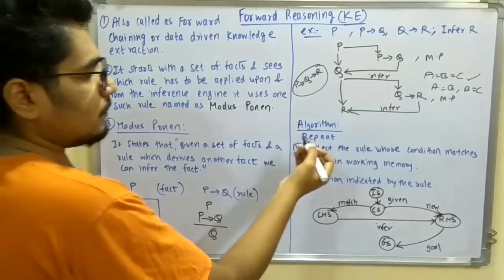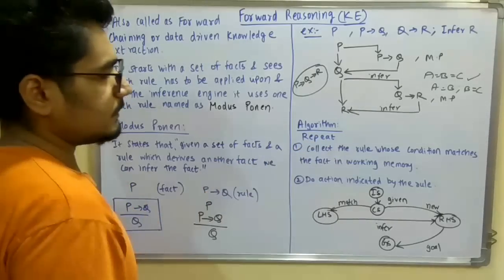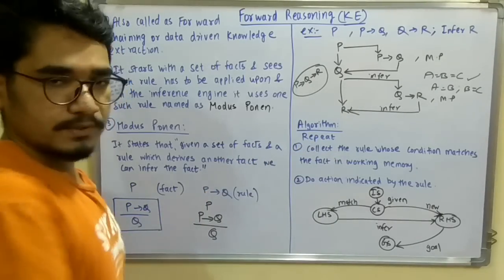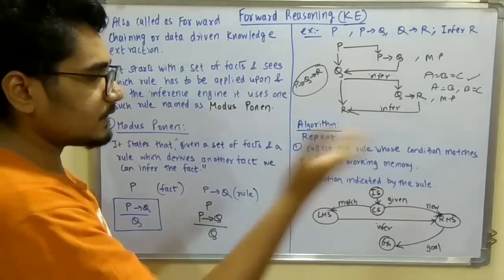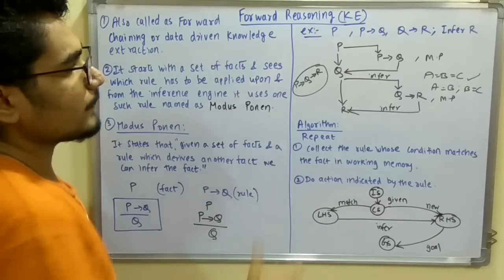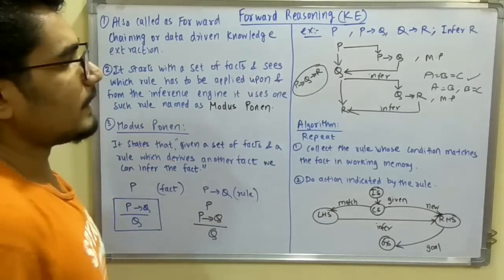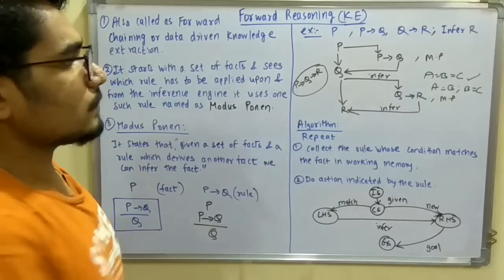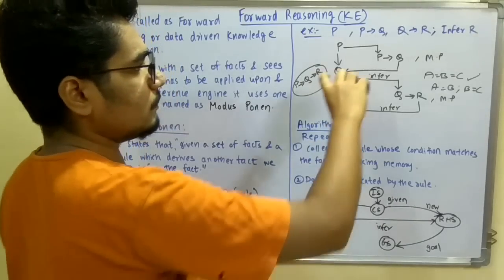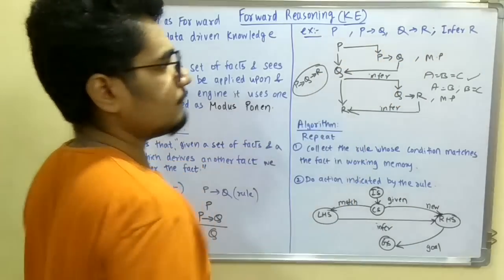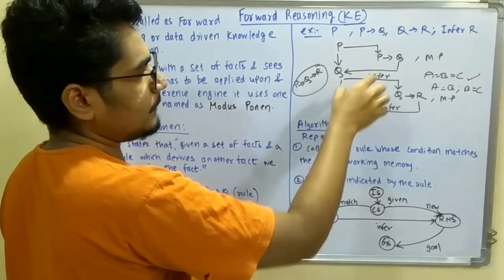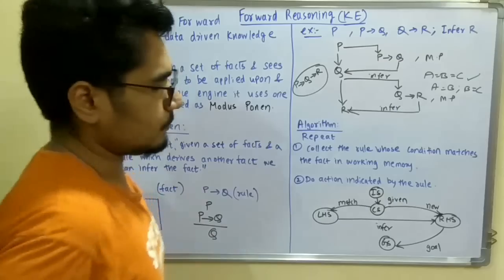There is an algorithm here. You apply a repeat loop, and the very first step is to collect the rule whose condition matches the fact in the working memory. You have this particular given fact and these kinds of rules. With this example, you cannot apply this rule at the very first stage because you have fact P, so you apply this very first rule.